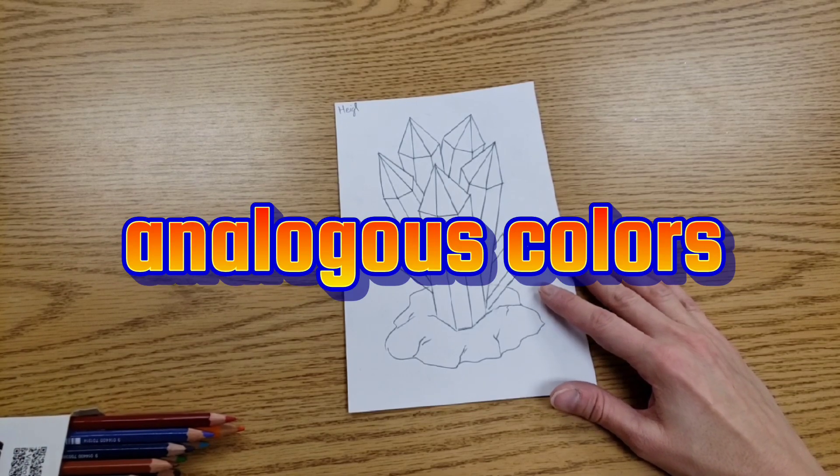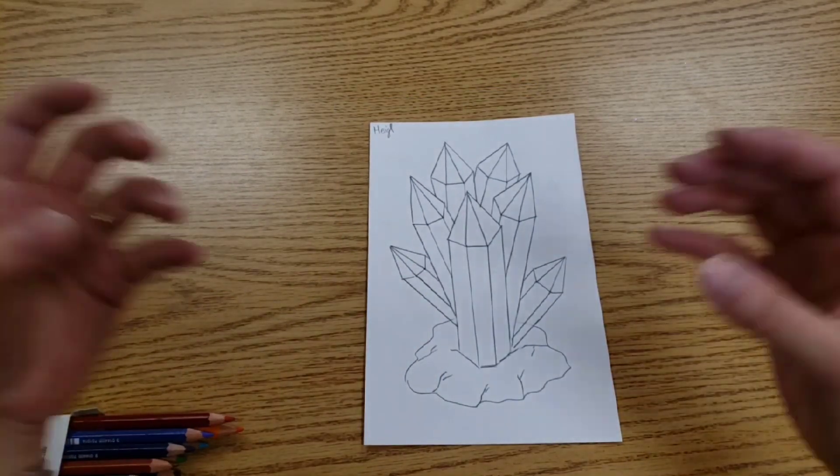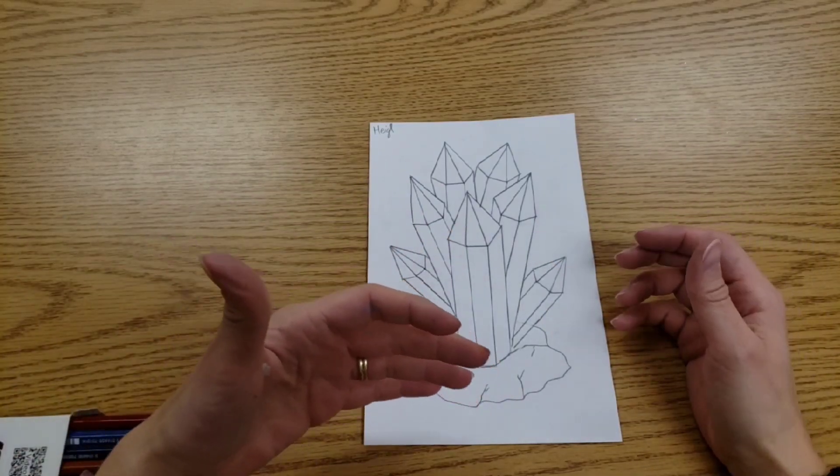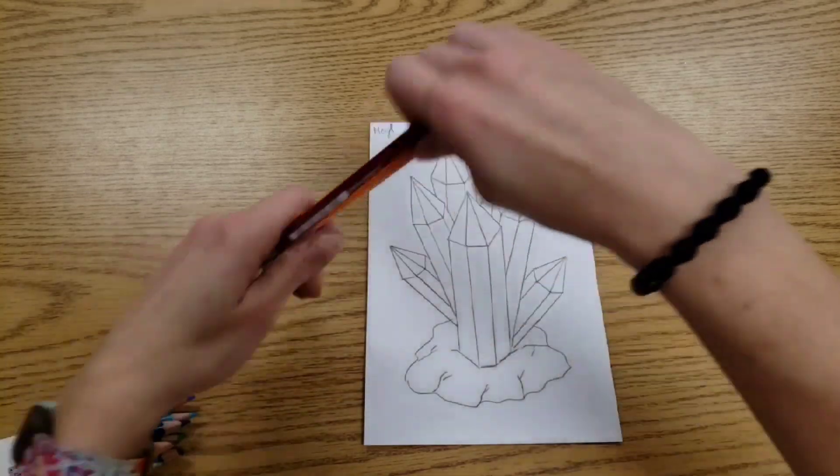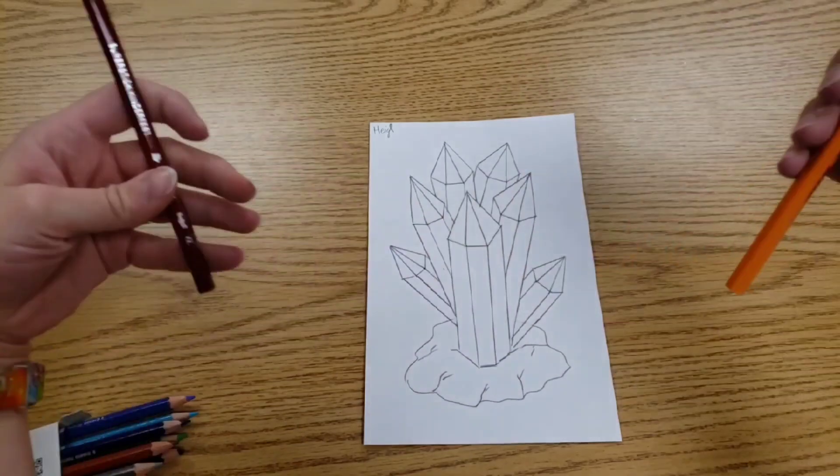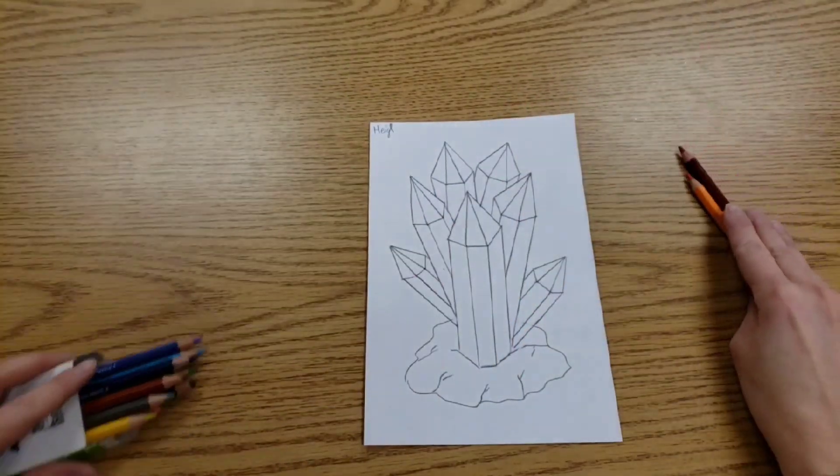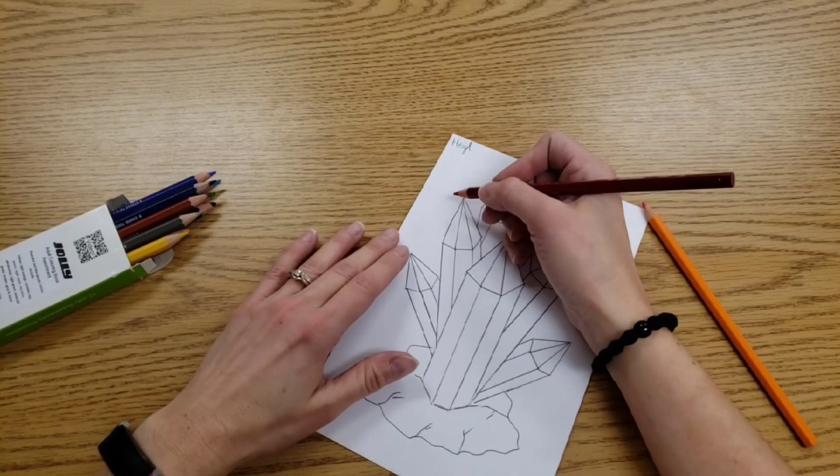Analogous colors are colors that are right next door to each other on the color wheel, and when they blend together they usually make something good like intermediate colors. For example, if we have red and orange, when those two colors blend together they make red orange. It's a color that looks nice and we're trying to show value inside each little segment on your crystals.